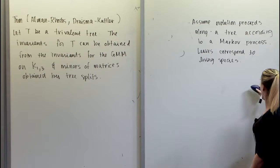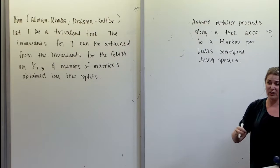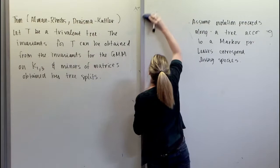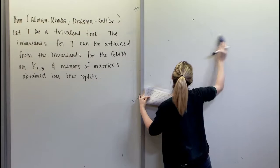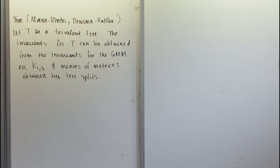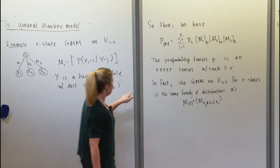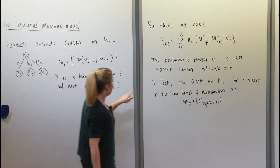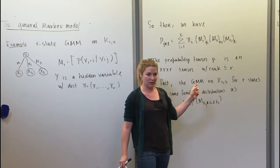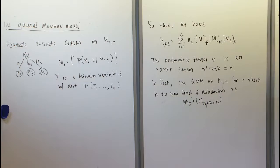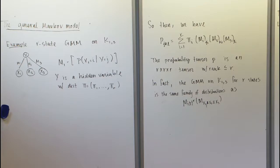'Invariants' is a canonical term in this literature meaning the generating polynomials of the ideal. For the two-state case, each random variable has two states, so I'm looking at 2×2×2 tensors of rank ≤ 2. Since the generic rank of 2×2×2 tensors is 2, they fill the whole space, so there are no invariants from the claw tree itself — only from the minors of matrices coming from the tree splits.